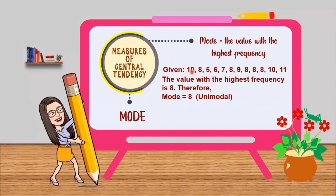How many tens do we have in the given values? We only have 2. How about 8? 1, 2, 3, 4, 5. So therefore, our mode is 8, and that is unimodal. Now take a look at this.